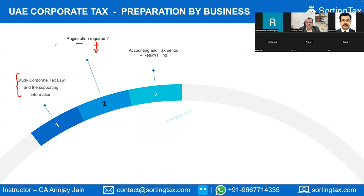The third preparation step is identifying the accounting and tax period to follow, as illustrated in the earlier examples. Generally, the return filing has to be done within nine months from the end of the respective financial year. So for people whose first financial year ends December 31, 2024, they need to file the return before September 30, 2025.